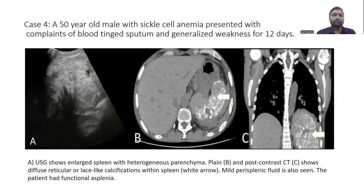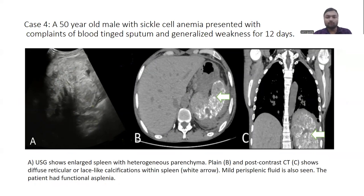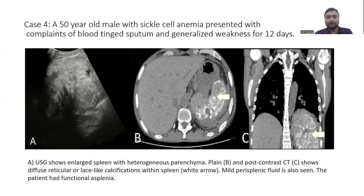Case 4: a 50-year-old male with sickle cell anemia presented with blood in sputum and generalized weakness for 12 days. Ultrasound showed a large spleen with heterogeneous parenchymal echotexture. On non-contrast CT, there was diffuse reticular or lace-like calcification within the spleen, with mild perisplenic fluid. The patient had a functionally asplenic spleen.